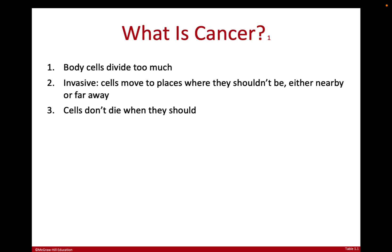You might have heard the word metastasis or metastatic cancer — that just means cancer that has moved to a far away place from where it started. The third characteristic is that these cells don't die when they should. If the cells divided too much and moved around but died when they were supposed to, you'd probably be okay. Cells are supposed to turn on internal programs that kill the cell when they start doing weird stuff. Cancer cells don't do that, and they also lack the normal division limit that regular cells have, which allows them to continue replicating and moving around.